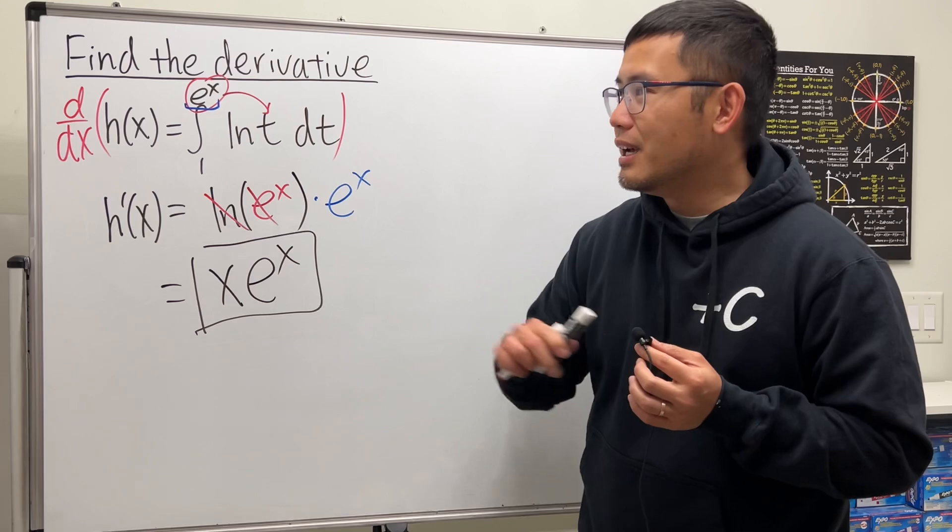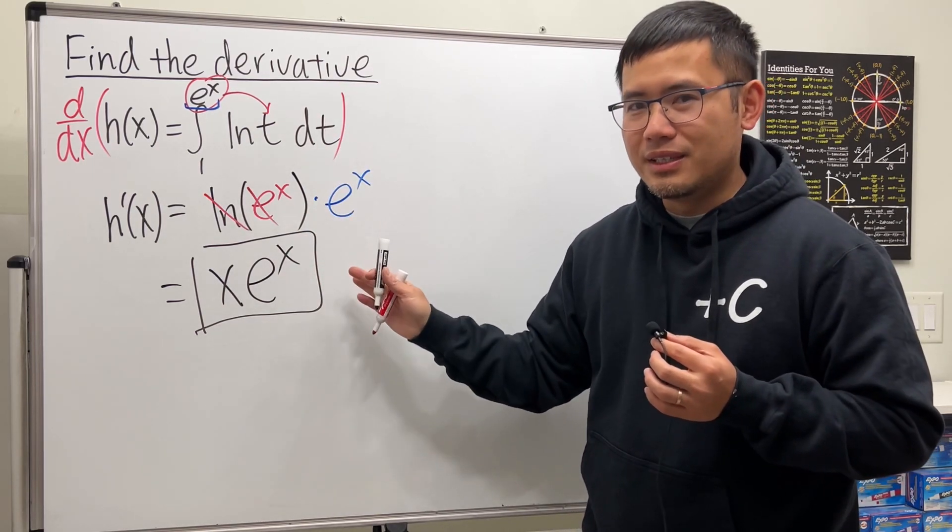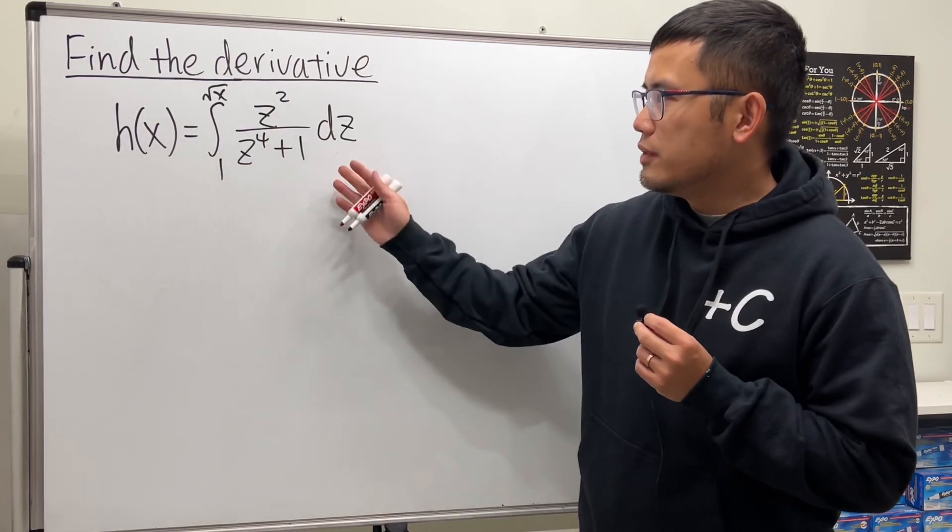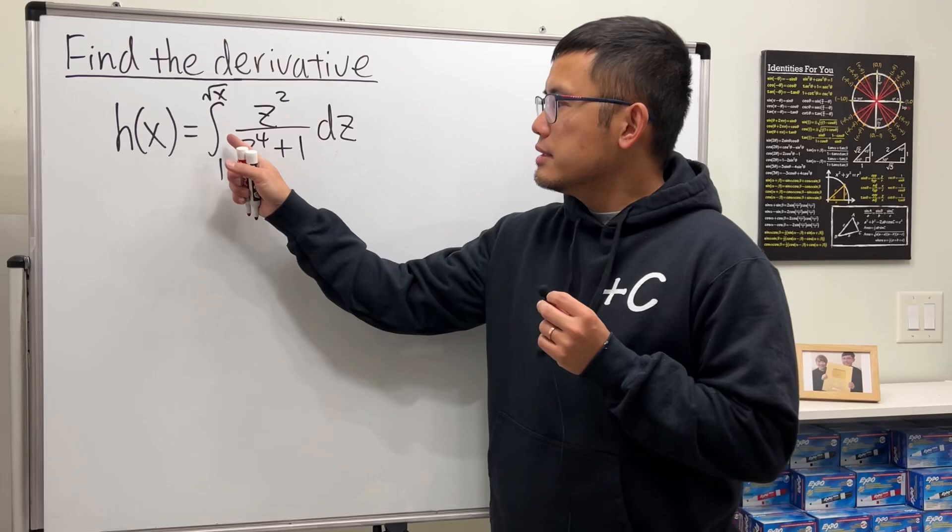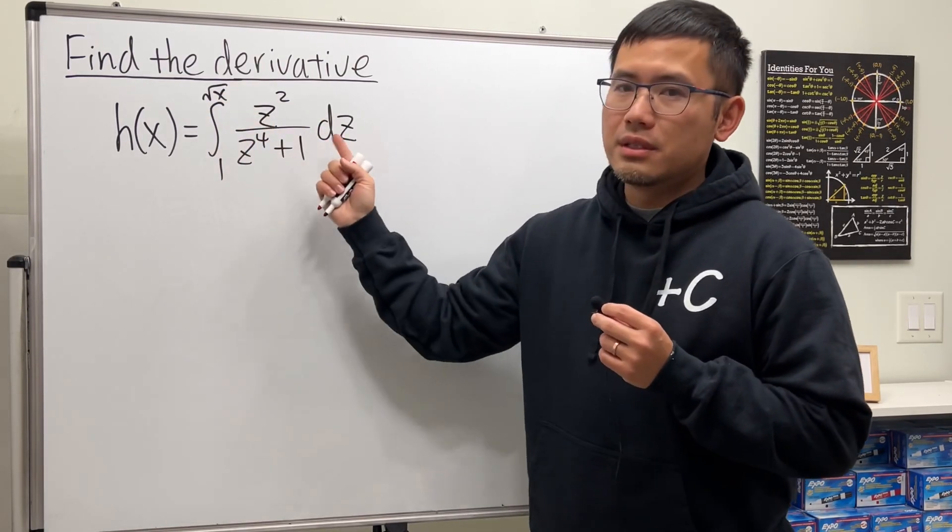But do not put on plus c, we are finding the derivative right here. We are not doing an indefinite integral, so this is it. All right, another example of finding the derivative of an integral function. This time, we have the integral from 1 to square root of x.